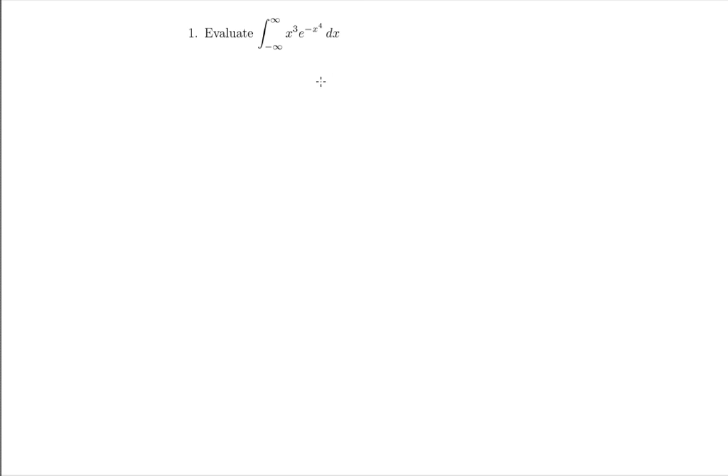In this question we're asked to calculate the integral from negative infinity to infinity of x cubed e to the negative x to the power of 4 with respect to x. This is an improper integral because not only is there one infinity symbol in one of the bounds of integration, but there are actually two. Both ends of our integral have infinity signs, so we need to treat this as an improper integration and be very careful about how we do this.